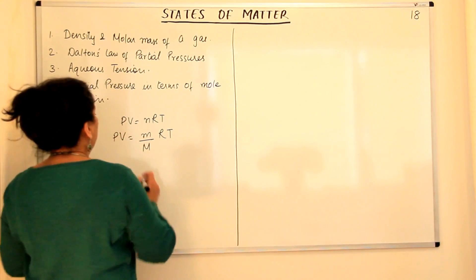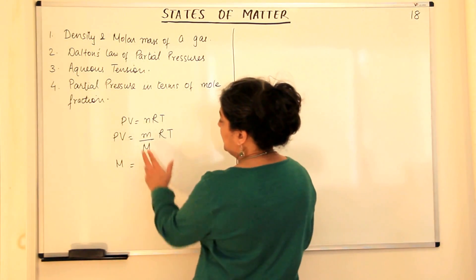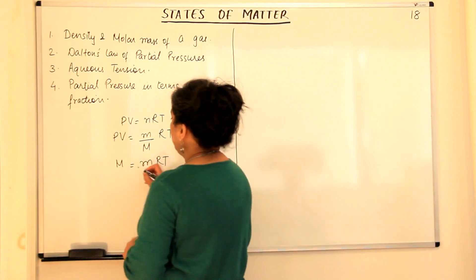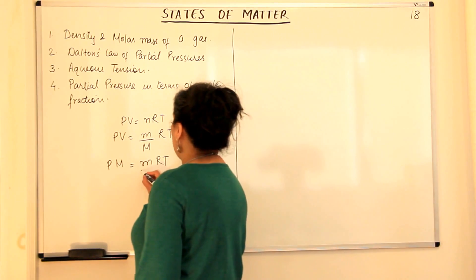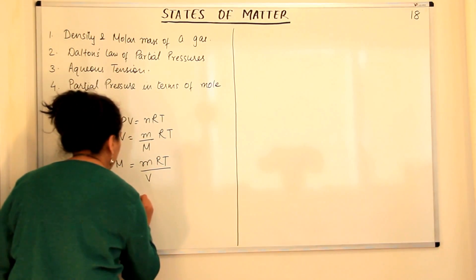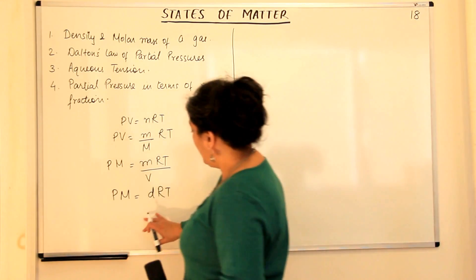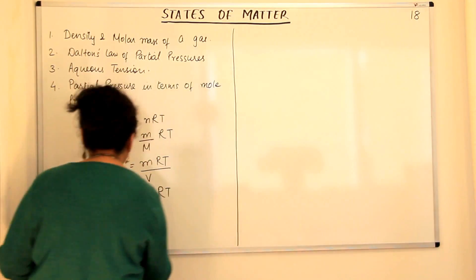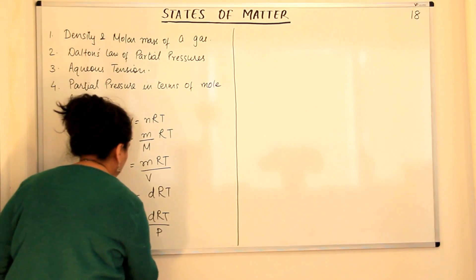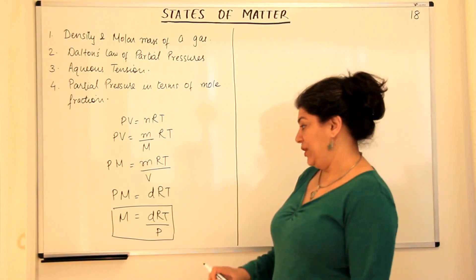Now if we rearrange this, we take M to the other side. On one side we have m, R, T and P, and we bring V down. Mass over volume is density. So we get PM = dRT. Now if we bring P down, we get molar mass M = dRT/P. This expression is commonly used in numerical problems to calculate the molar mass from the ideal gas equation.